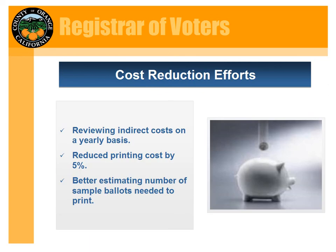Some of the things we do to try to reduce our costs: we review our indirect costs on a yearly basis and look at ways to reduce that amount. We competitively procure our translation and sample ballot printing — in the last competitive procurement we reduced our printing cost by 5% overall. We're also looking at better estimating the number of sample ballots we need to print, because keeping the number closer to what we actually use will reduce cost, since printing tends to be the largest part of candidate statement costs.